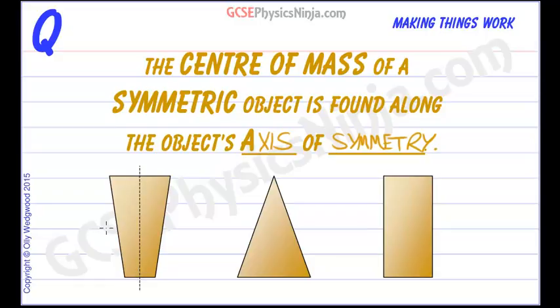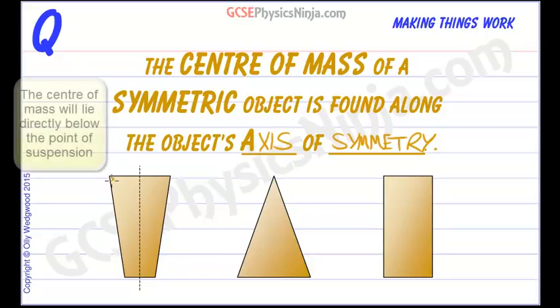We could find where the center of mass is exactly by hanging it from a pin at a corner and also hanging a plumb line. We've looked at that in another flashcard describing an experiment to find the center of mass of an irregular shape.